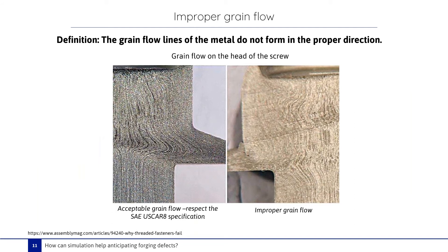During forging, another defect that can appear is the improper grain flow. The deformation leads to grain flow orientation, and the grain flow lines of the metal may not be formed in the proper direction. Here, the grain flow does not respect the specification needed to guarantee the part's mechanical properties. To the right, this grain flow does respect the AS9100 specification needed in the head of the screw. We can see the lines and the form of the lines in the head of the screw.